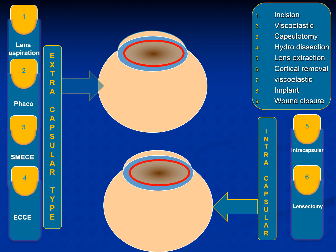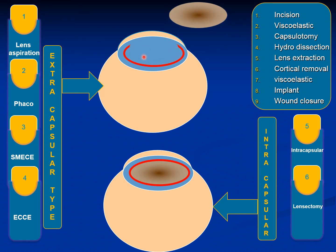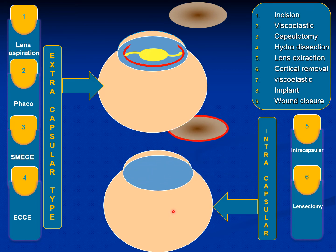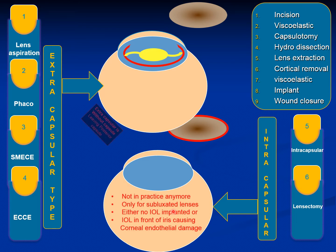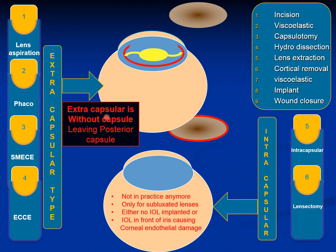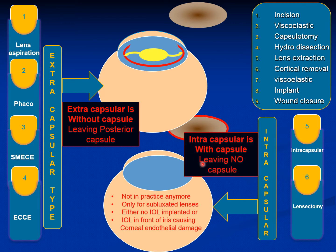Looking at the diagram: in the top example, we take the anterior capsule off and the lens comes out, but the posterior capsule is still there. The implant will rest on the posterior capsule. In the second example, the whole lens along with both the anterior and posterior capsule comes out — this is intracapsular cataract extraction.